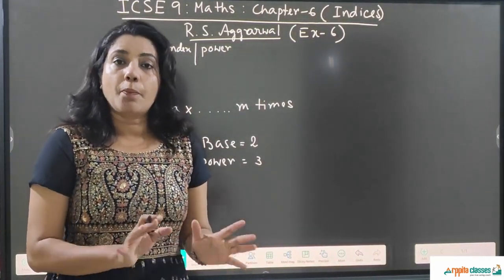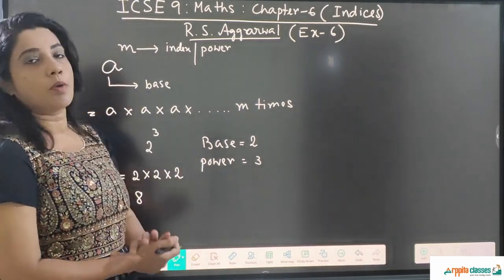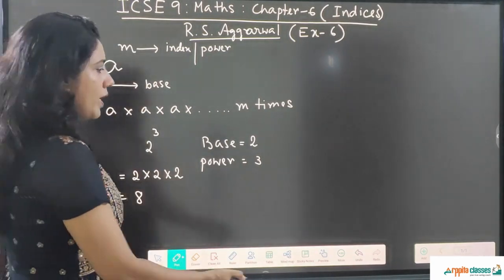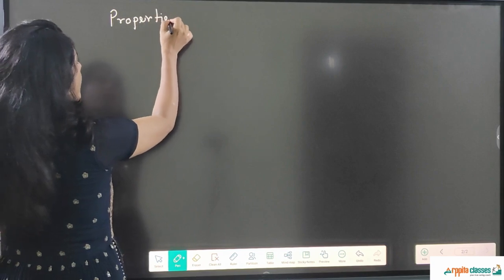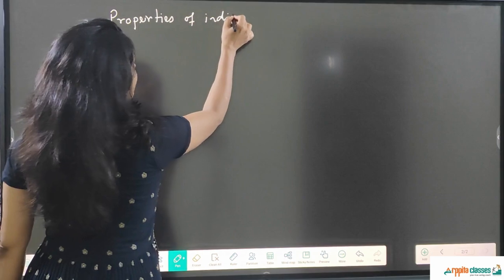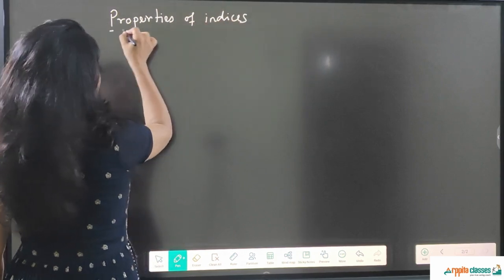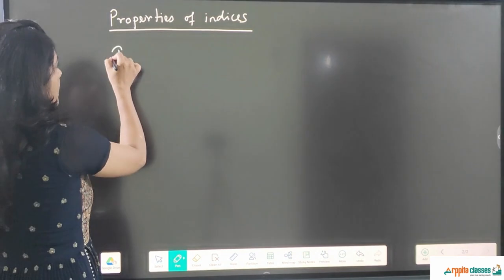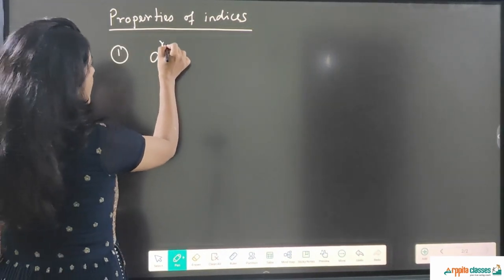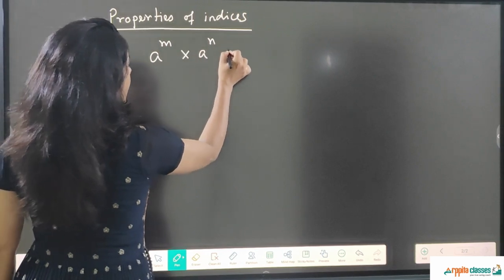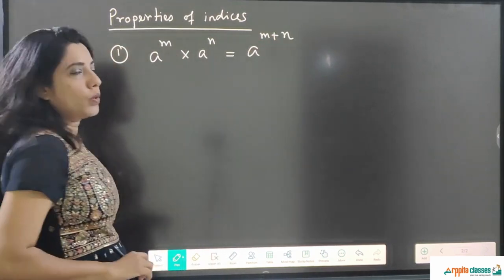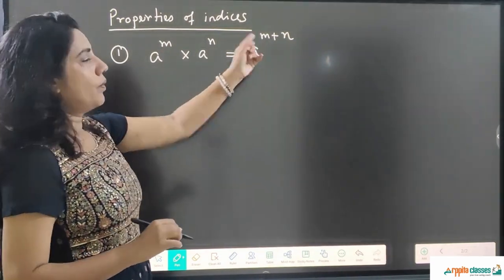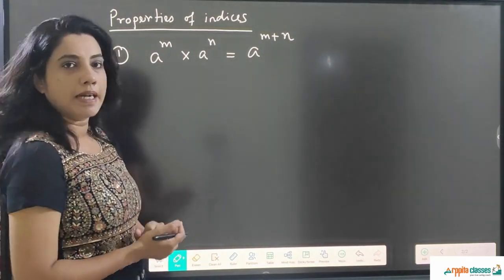Today we are going to discuss the properties of Indices and then solve sums from R.S. Aggarwal. So let us talk about the properties of Indices — which you need to remember all the time. The first property is: a to the power m multiplied by a to the power n equals a to the power m plus n. So if the base is the same, we can add the powers when they are in multiplication form.